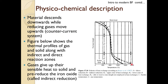Hot gases come from the tuyere where combustion occurs at very high temperature. A dashed line shows the gas temperature profile and the solid line shows the raw material temperature. Hot gas ascending transfers sensible heat to the solid, so solid temperature also increases. In a certain region, the temperatures converge and this region is the indirect reaction zone.